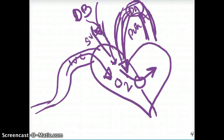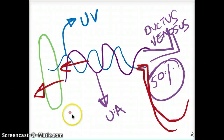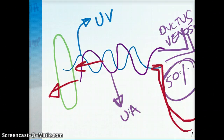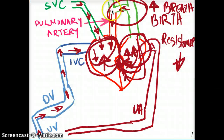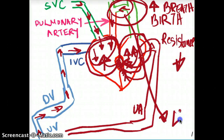What happens to the ductus arteriosus? The ductus arteriosus is converted to the ligamentum arteriosum. If it does not close, that is when we call it patent ductus arteriosus (PDA).